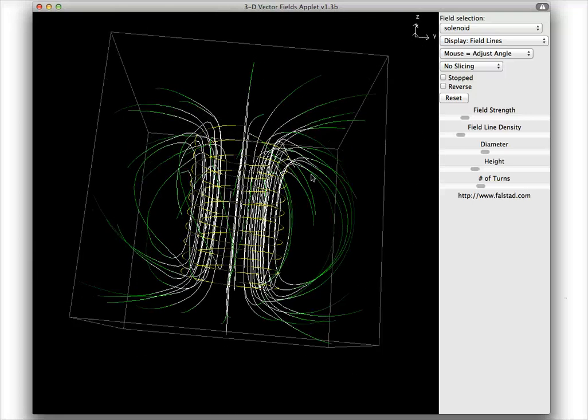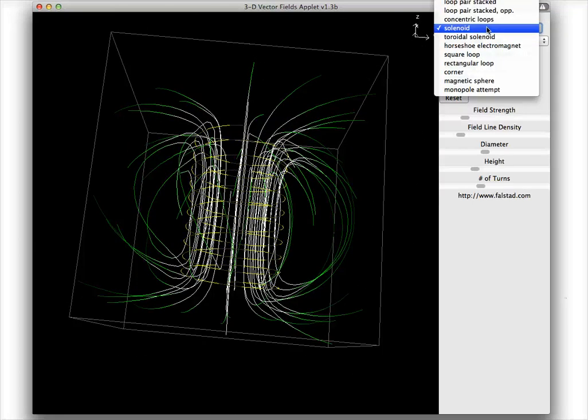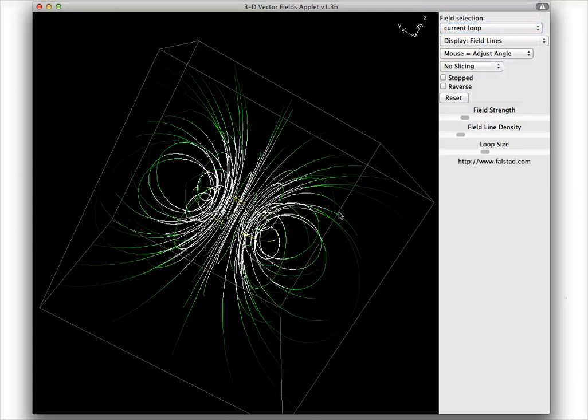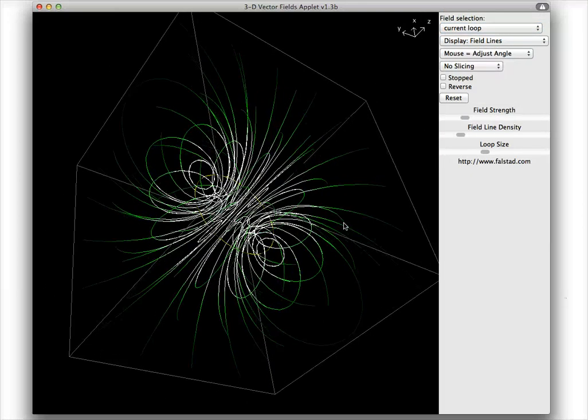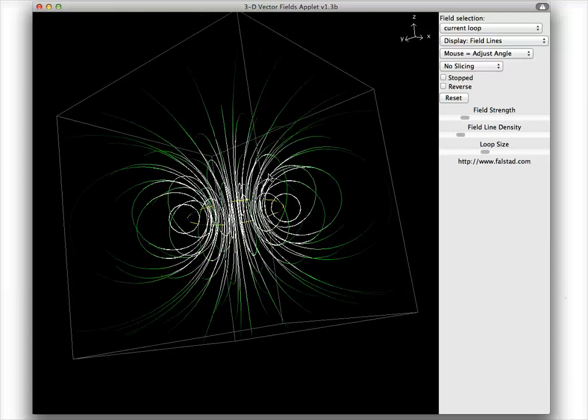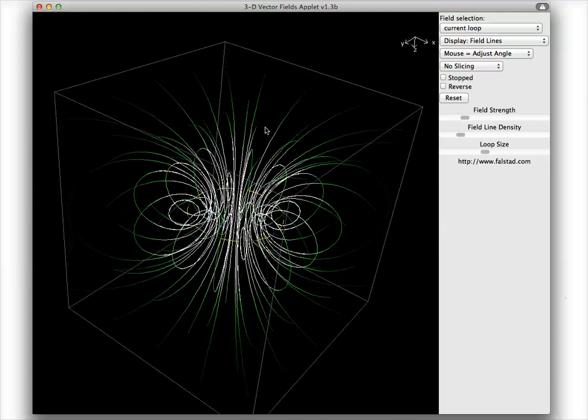We can look at a single current loop and you can see the same effect. The lines are going out and away, they're not straight, and that's going to be really important for us moving forward.